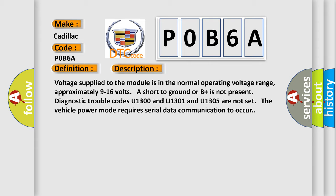Voltage supply to the module is in the normal operating voltage range. Approximately 9 to 16 volts are short to ground or B plus is not present. Diagnostic trouble codes U1300, U1301, and U1305 are not set.